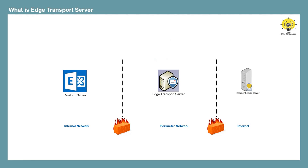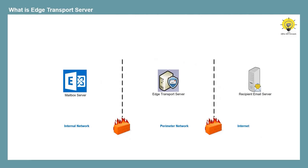Edge Transport Server is always deployed in a perimeter network. The machine where we install Edge Transport Server is never joined to the Active Directory forest. When we deploy Edge Transport Server, the external inbound and outbound email flow is handled by the Edge Transport Server. So even if you are exposing this server to the internet, you can still minimize the security risk for your on-premise infrastructure, because the Edge server is never a part of the domain network.